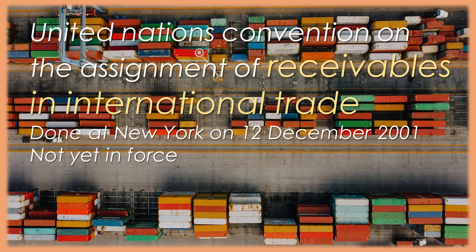g. Priority means the right of a person in preference to the right of another person and, to the extent relevant for such purpose, includes the determination whether the right is a personal or a property right, whether or not it is a security right for indebtedness or other obligation, and whether any requirements necessary to render the right effective against a competing claim have been satisfied. h. A person is located in the state in which it has its place of business. If the assigner or the assignee has a place of business in more than one state, the place of business is that place where the central administration of the assigner or the assignee is exercised. If the debtor has a place of business in more than one state, the place of business is that which has the closest relationship to the original contract. If a person does not have a place of business, reference is to be made to the habitual residence of that person.